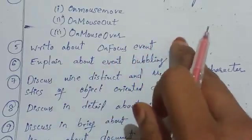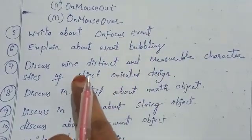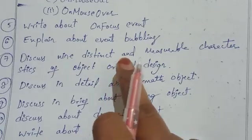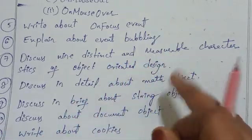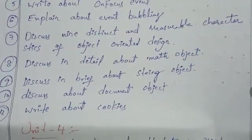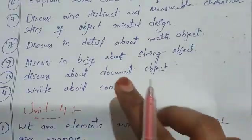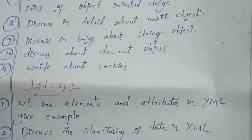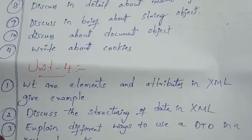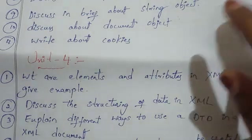Fifth one is about on-focus event. Sixth question is about event bubbling. Seventh one is about nine distinct measurable characteristics of object-oriented design - that's object-oriented concept. Eighth one is about math object. Ninth one is about string object. Tenth one is about document object. Eleventh one is about cookies.